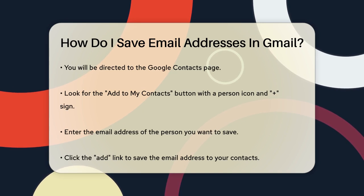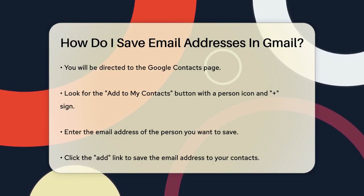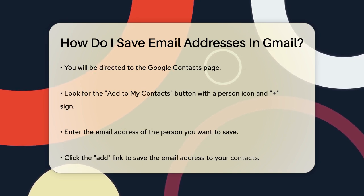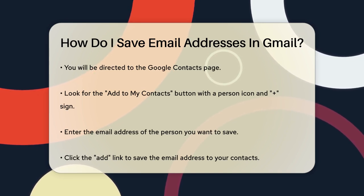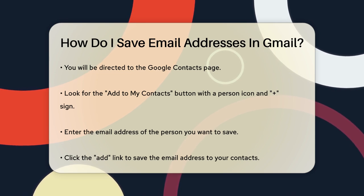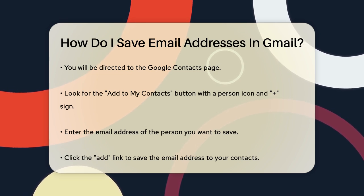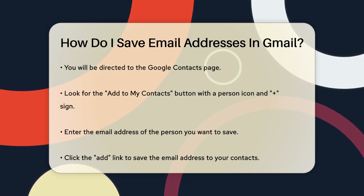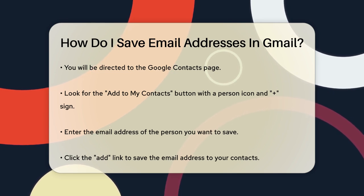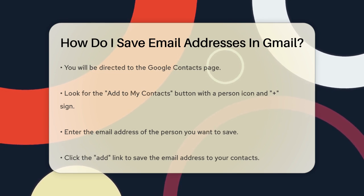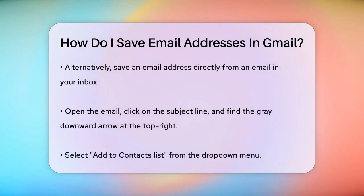Here you'll see a button labeled 'Add to my Contacts' with an icon of a head and shoulders silhouette of a person and a plus sign. Click on this button. Now enter the email address of the person you want to add to your contacts. Once you've typed it in, click the Add link and the email address will be saved to your contacts list.